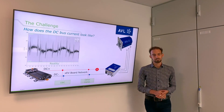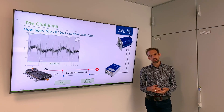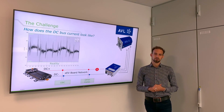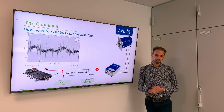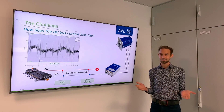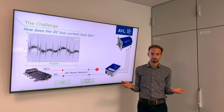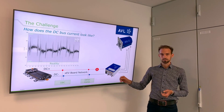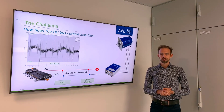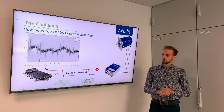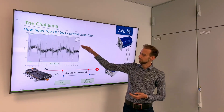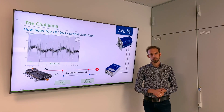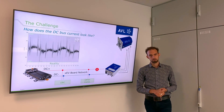Typically these tests are carried out with constant current or constant voltage profiles. But the real world looks something different. If we put an ammeter right here, we will see that there are a lot of disturbances on the DC bus. These disturbances we call ripple.